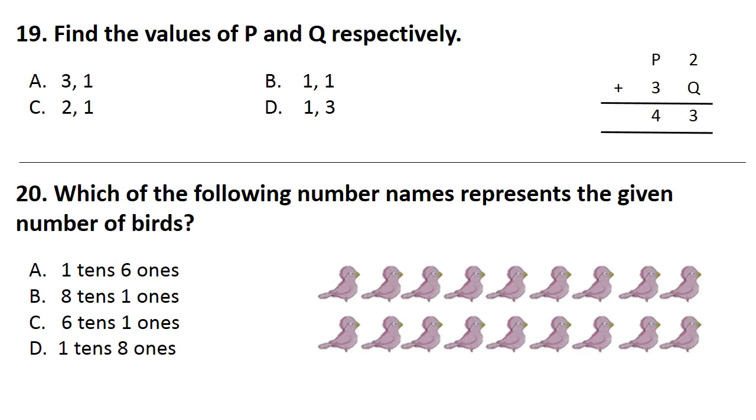Question No. 19. Find the values of P and Q respectively. Answer is Option B. That is 1, 1, 1. Question No. 20. Which of the following number names represents the given number of birds? Answer is Option D. 1, 10, 8, 1s.